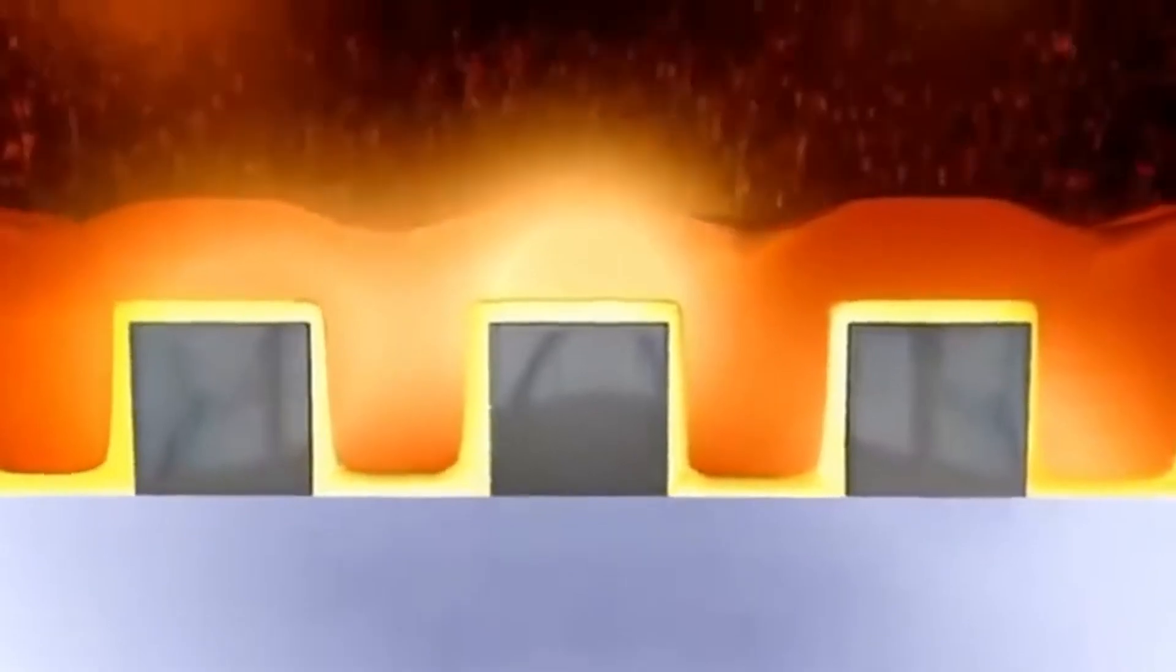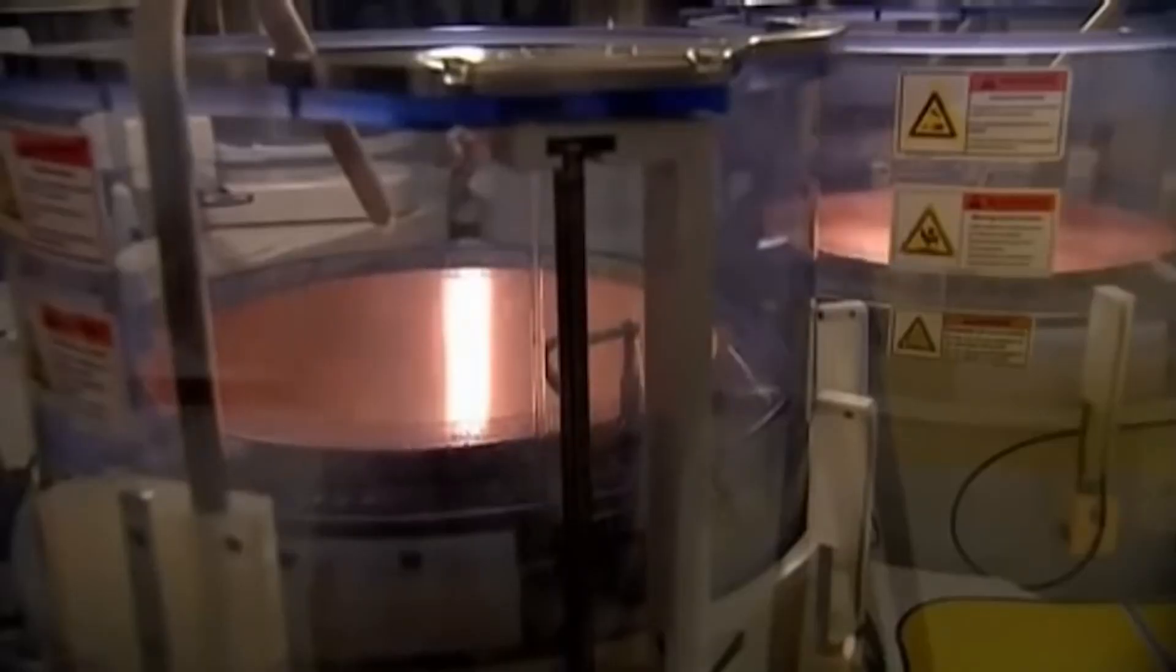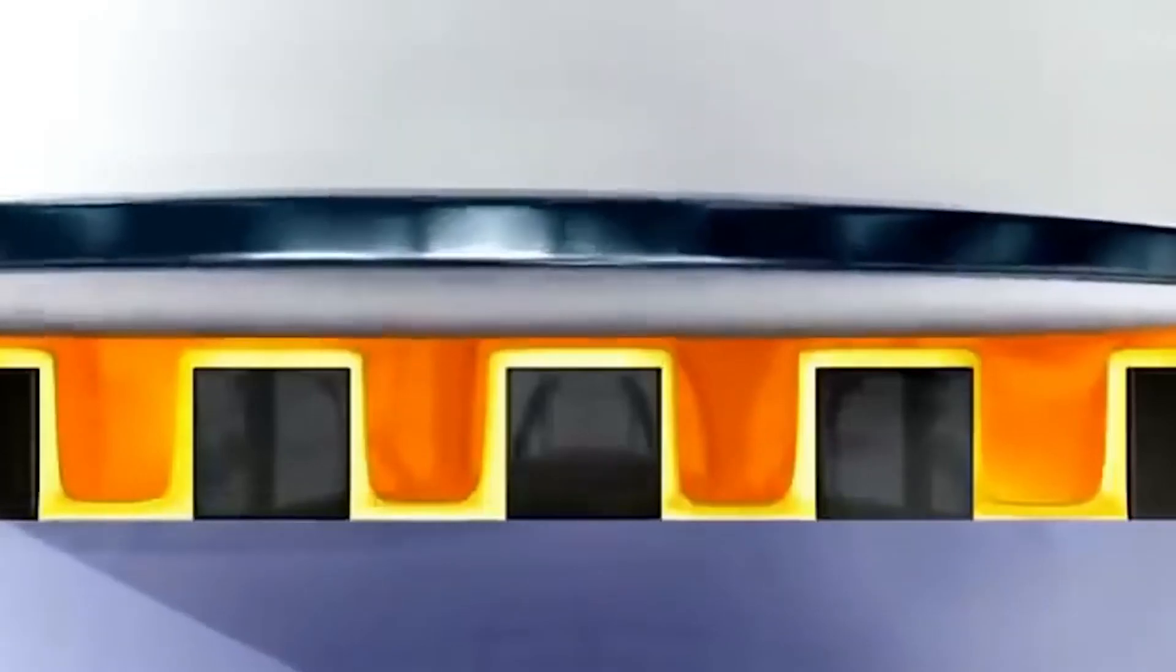Before pouring copper into the trenches for the interconnections, a barrier layer is applied. This helps prevent short circuits and ensures reliability. Then, the trenches are filled with copper. The excess copper is ground down to the edges of the trenches. This isolates each interconnection from the others.